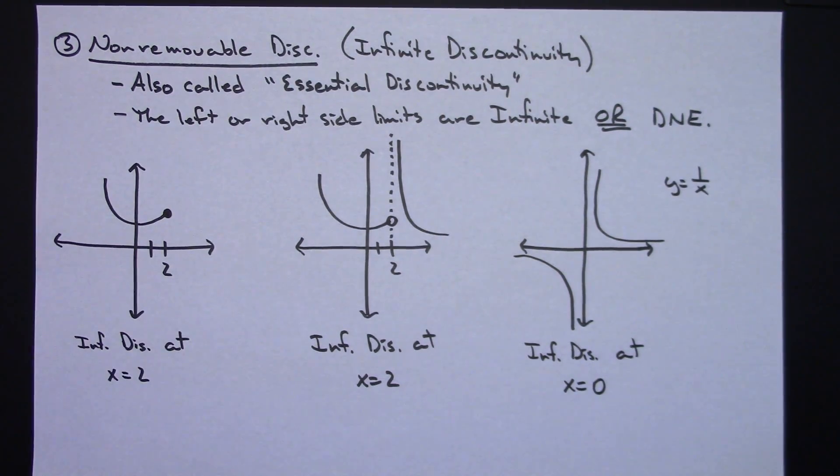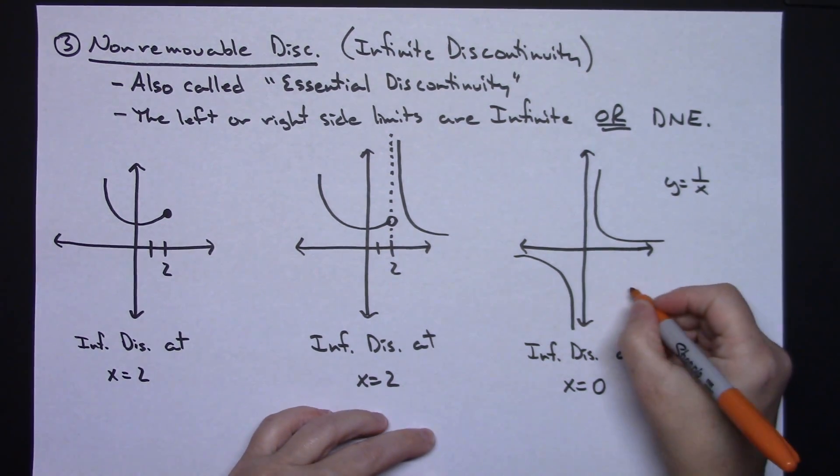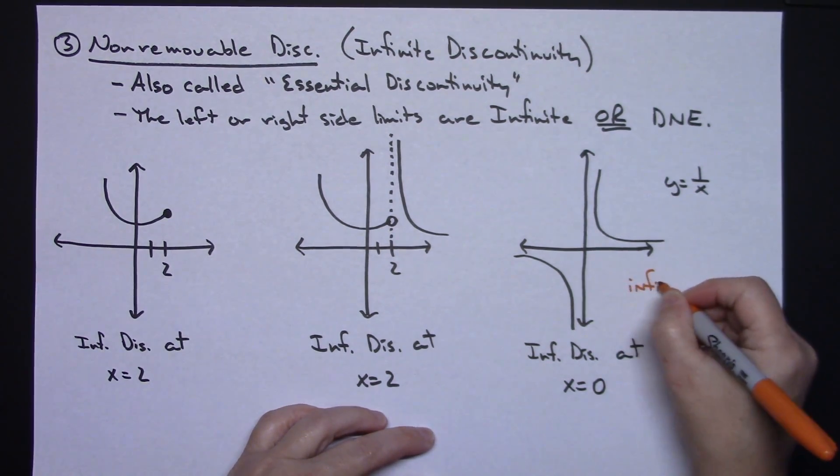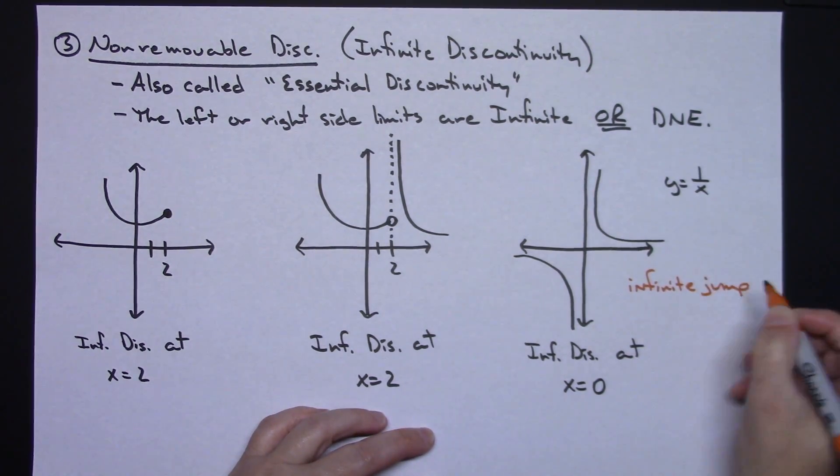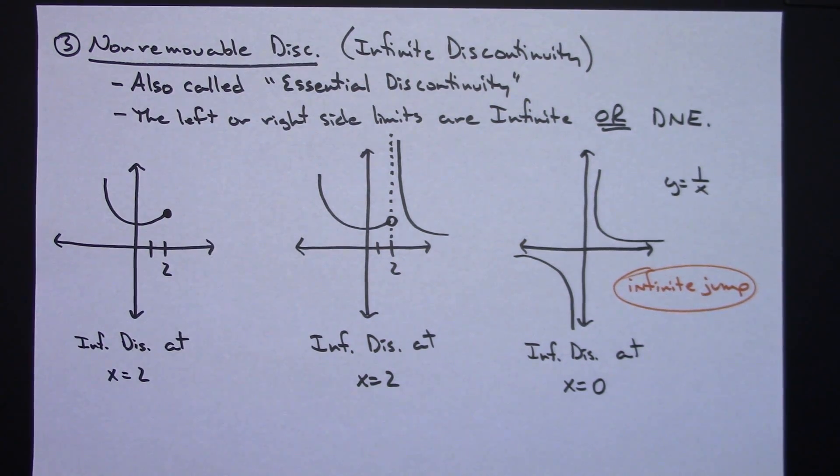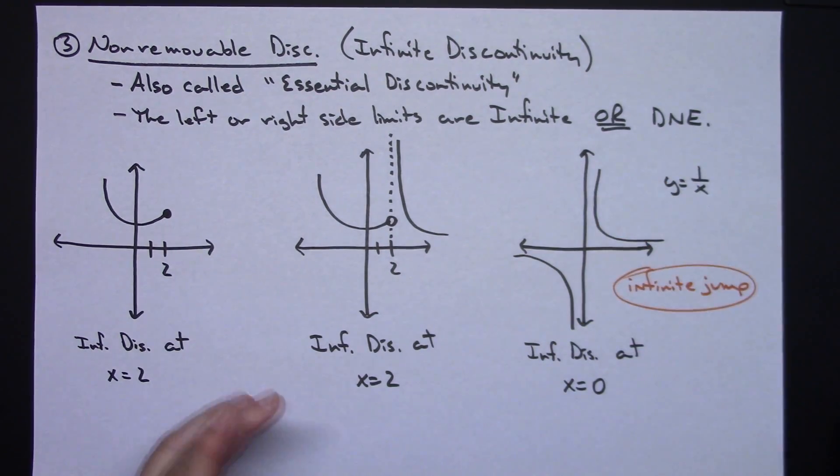And then the other thing on this one that I might note, I have seen this called an infinite jump. There again, different textbooks and different authors are going to call things different names, but I have seen that one also called an infinite jump. Because technically the graph is jumping, I've got to draw this section, lift my pencil to come over here and draw this section.